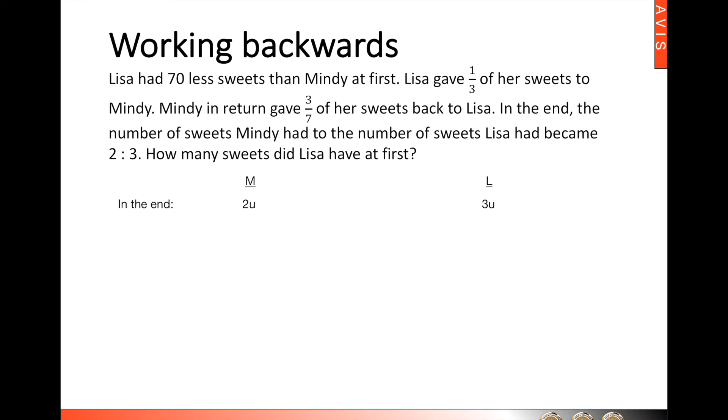Now, we need to reverse the actions accordingly. In the last action, Mindy gave 3/7 of her sweets to Lisa. That means Mindy would have left 4/7 of her sweets. So, we have to make the lowest common multiple of 4 for Mindy. We multiply by 2 to make Mindy 4 units.